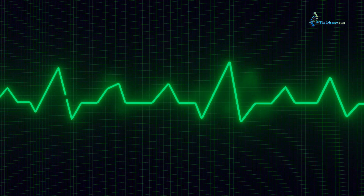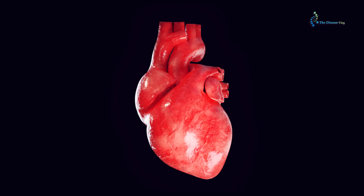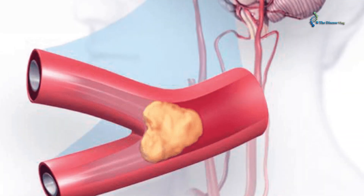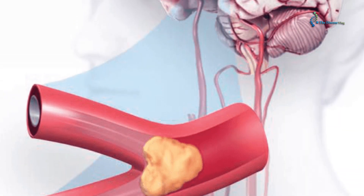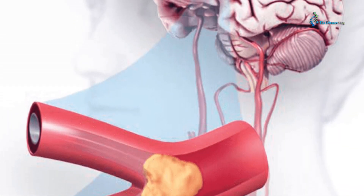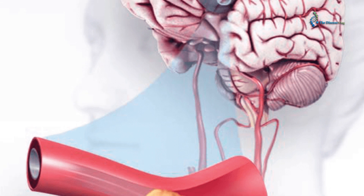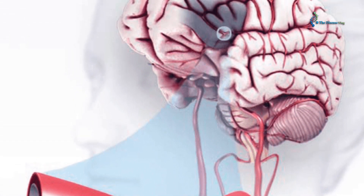A second complication of CAD is an irregular heartbeat. CAD is a condition in which the heart does not get enough oxygen, which affects some heart tissues and damages the heart rate. The heartbeat becomes faster or slower, leading to heart rhythm problems. These problems sometimes cause blood clotting in the heart, and when this clot is pushed and reaches the brain, it causes a stroke.